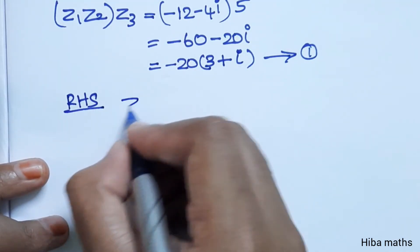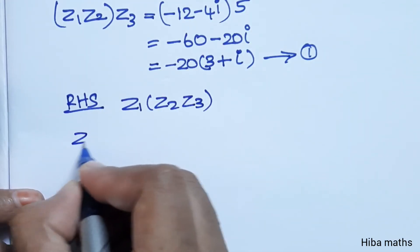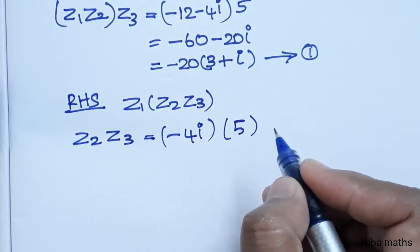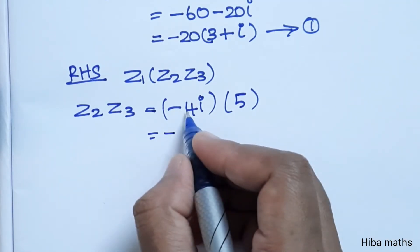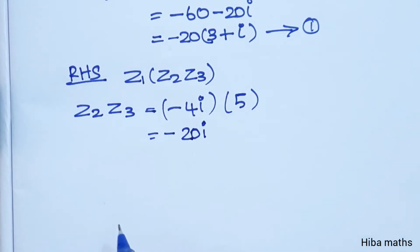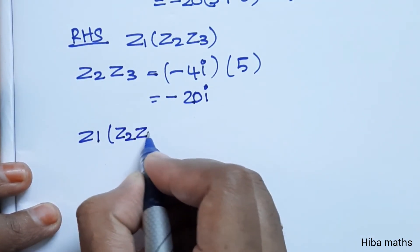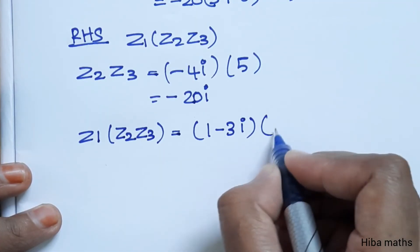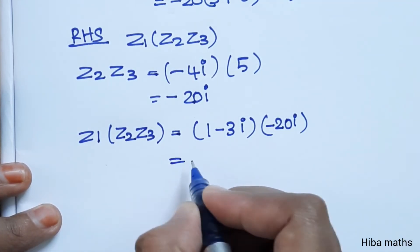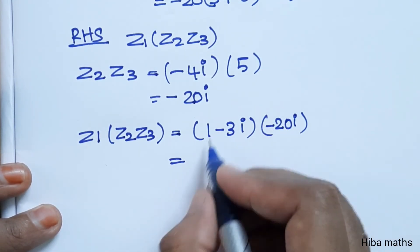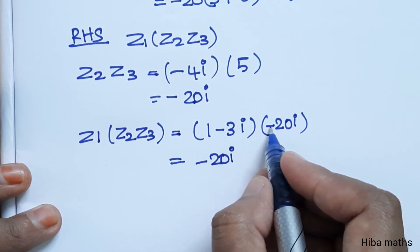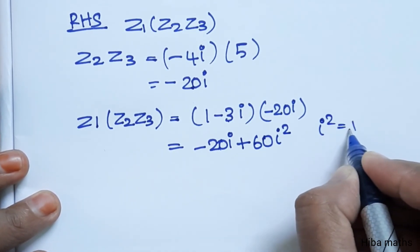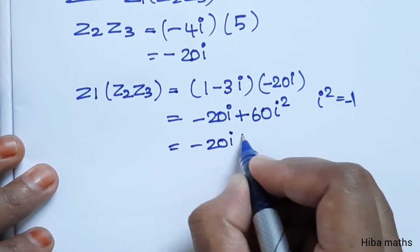For RHS: z1 into z2 into z3. First solve z2 into z3. Minus 4i into z3 value 5 gives minus 20i. Then z1 into z2·z3: 1 minus 3i into minus 20i. That is 1 into minus 20i equals minus 20i, and minus 3i into minus 20i equals plus 60i squared. i squared is minus 1, so 60 into minus 1 is minus 60.